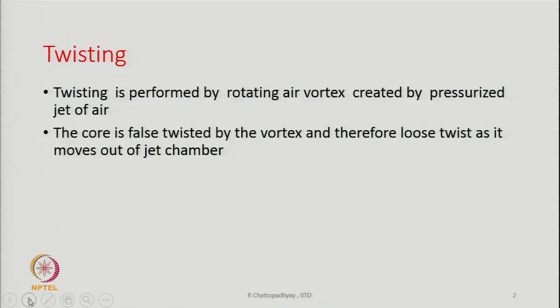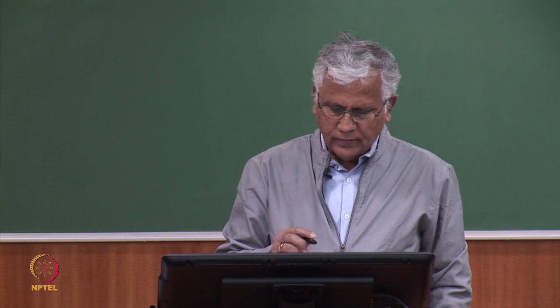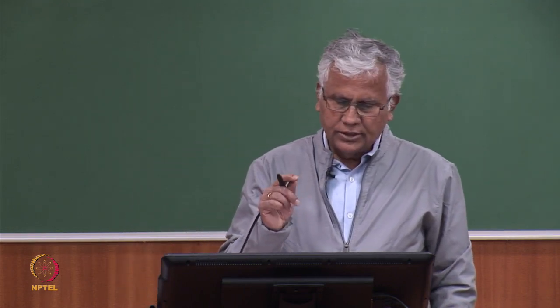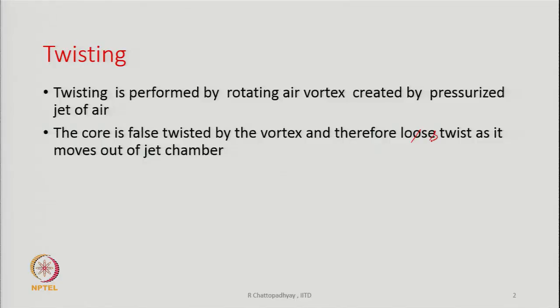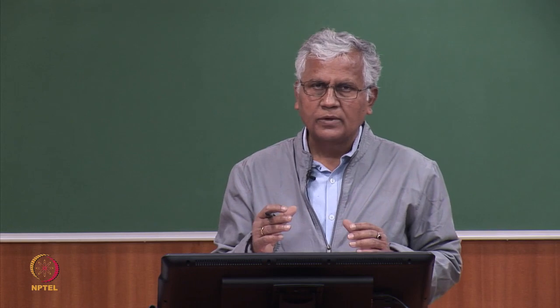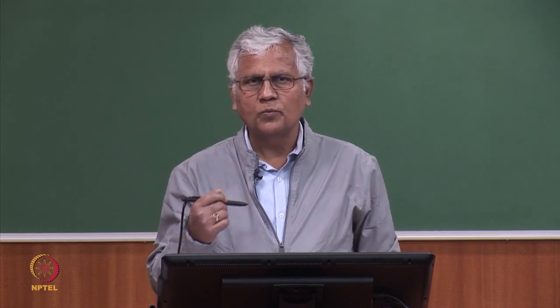The core part of the yarn is force-twisted by the vortex, and therefore it loses twist as it moves out of the jet chamber. Any force twist will be nullified as soon as the yarn leaves the twisting element — in this case, the air jet unit. So essentially it is generating false twist, and that false twist is generated in the core part of the yarn.